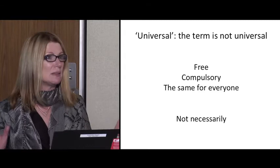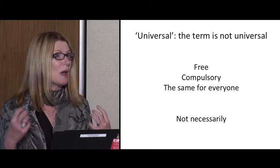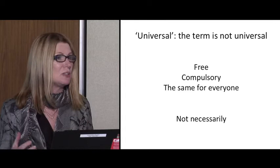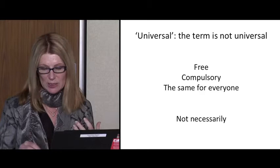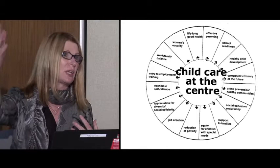One of the principles of universality is that while programs are available to everyone, there is special outreach and special accommodations made so that everyone actually does get to participate. With those caveats, we tend to think of universality as something that raises the bar for kids — better reading scores, higher graduation rates. But particularly for child care, depending on the jurisdiction, programs are expected to produce a range of things beyond just academic outcomes.